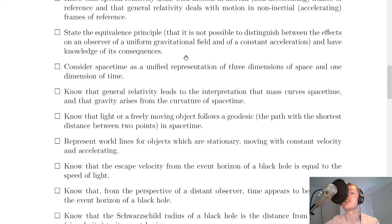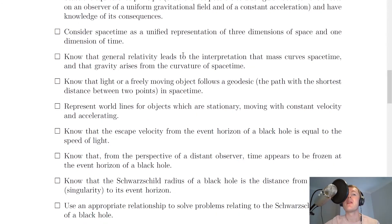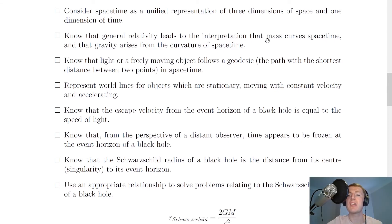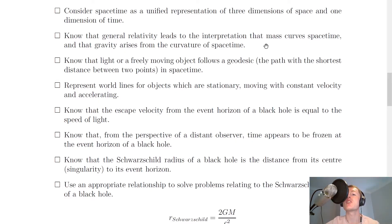A consequence of the equivalence principle is gravitational time dilation, where objects in stronger gravitational fields experience slowed time. You also need to consider space-time as a unified representation of three dimensions of space (x, y, z) and one dimension of time (t). General relativity leads to the interpretation that mass curves space-time and that gravity arises from that curvature. We can use the rubber sheet analogy to think about this, and how smaller masses passing close to warped space-time will have their paths changed.